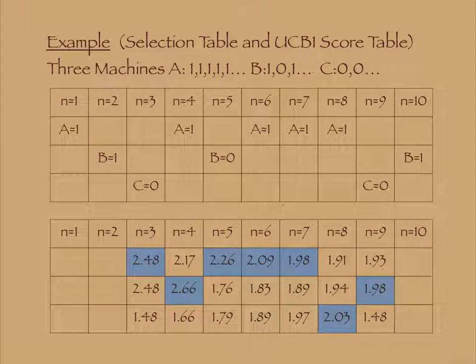After running each machine once, we run A once, B once, A three times, C once, and B once. This selection is near optimal selection.